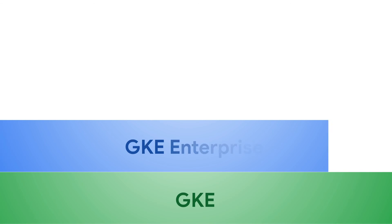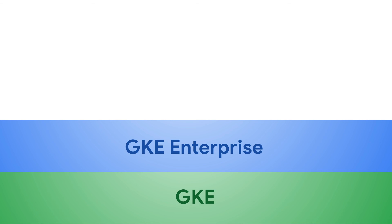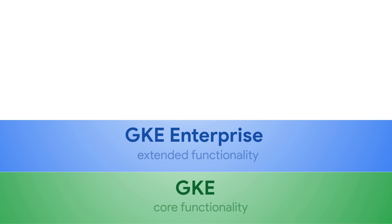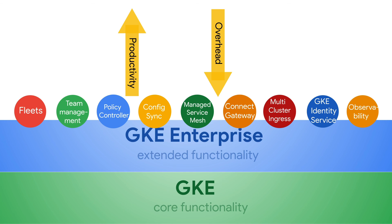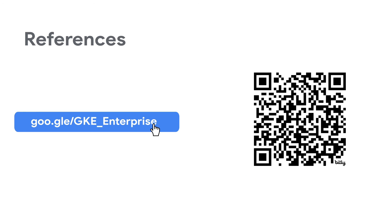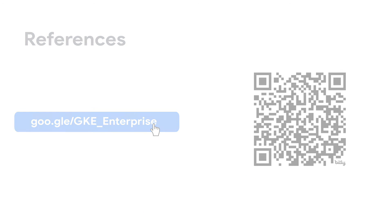So to summarize, GKE features are now available in two tiers or editions — the standard tier and the enterprise tier — which includes the core functionality plus a range of advanced features that you can use to improve your productivity and reduce your software deployment times. For more information, check out our documentation on GKE Enterprise.